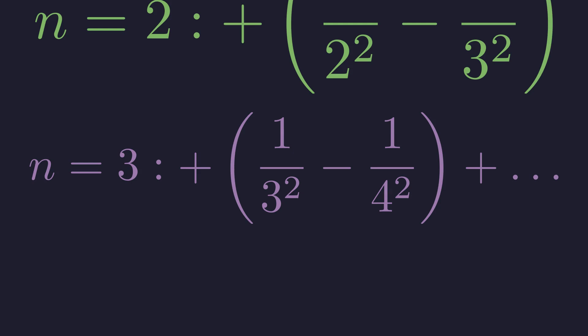And this pattern continues indefinitely. Observe that the −1/2² from the first term cancels with the +1/2² from the second term. Similarly, the −1/3² cancels with the +1/3². This will happen for every intermediate term.